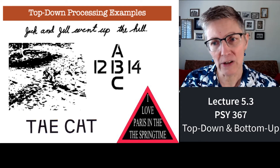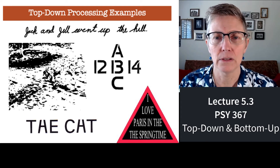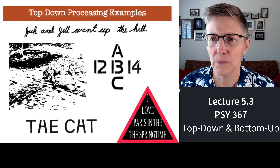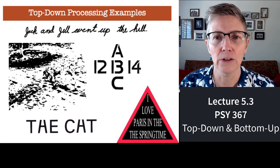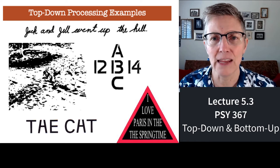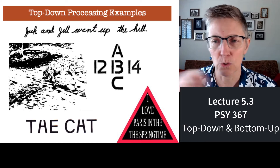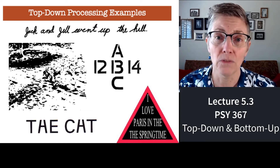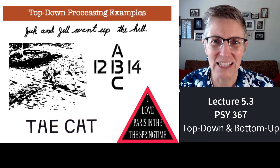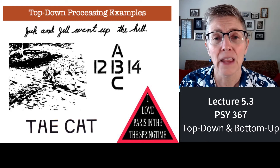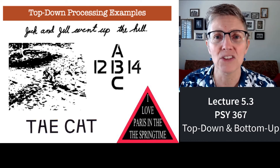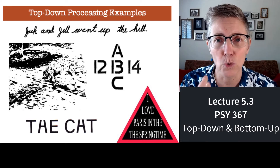We've already talked about context effects with the cat illustration. There's a similar one on this figure. If you read vertically, you see the letters ABC. If you read horizontally, you see the numbers 12, 13, 14. But obviously the B and the 13 are exactly the same figure. How we perceive them — whether as a letter or a number — depends on the context, depends on what's surrounding it.